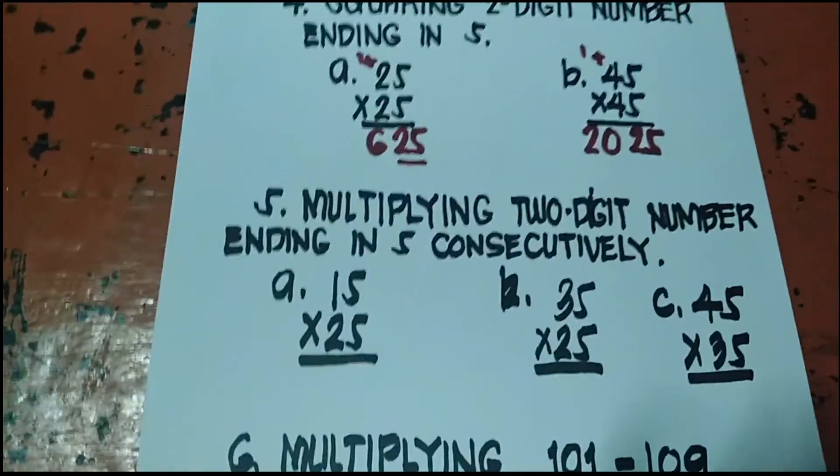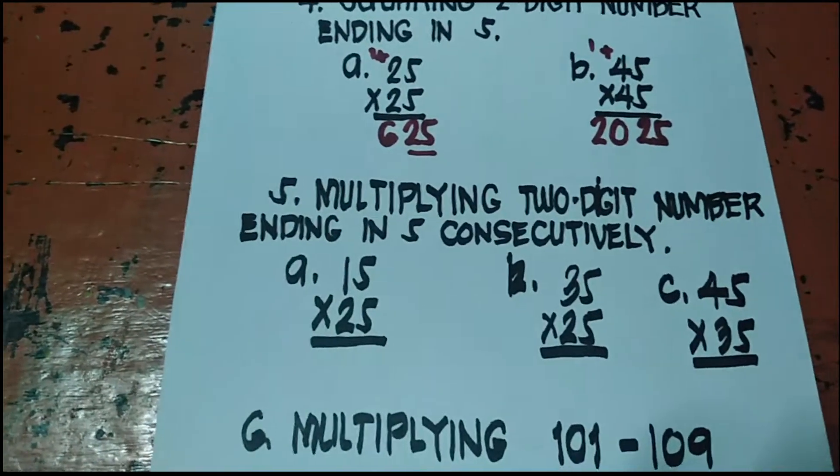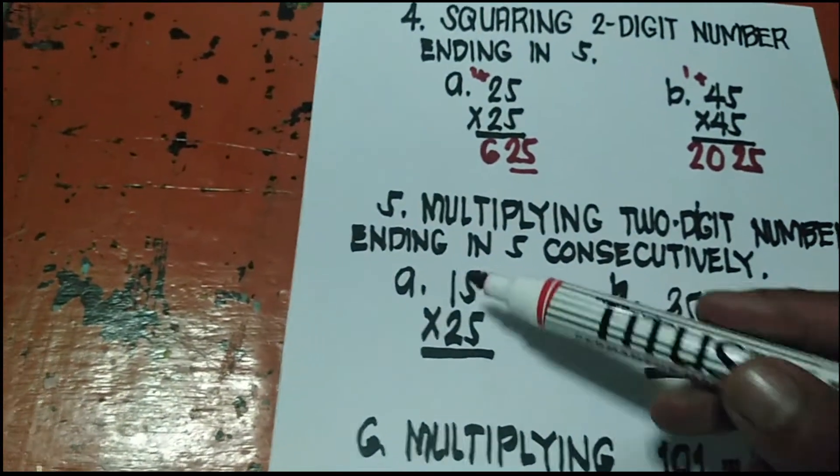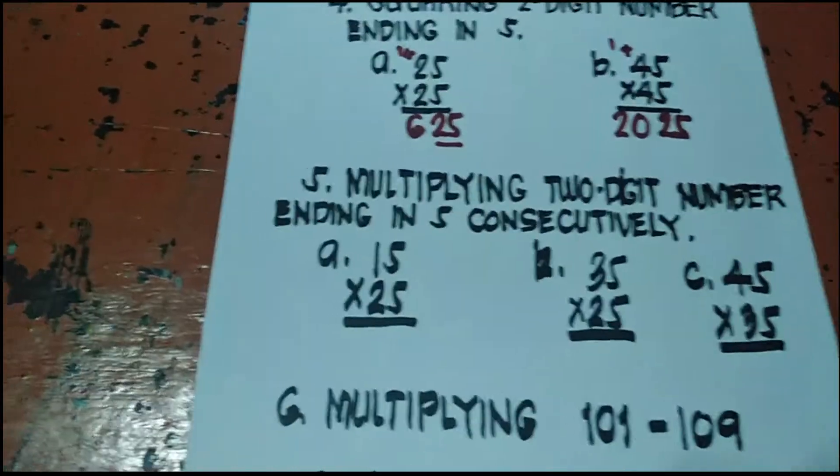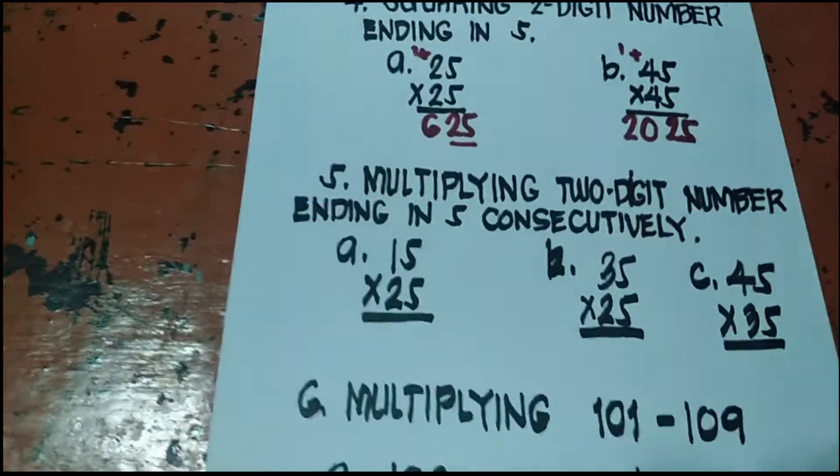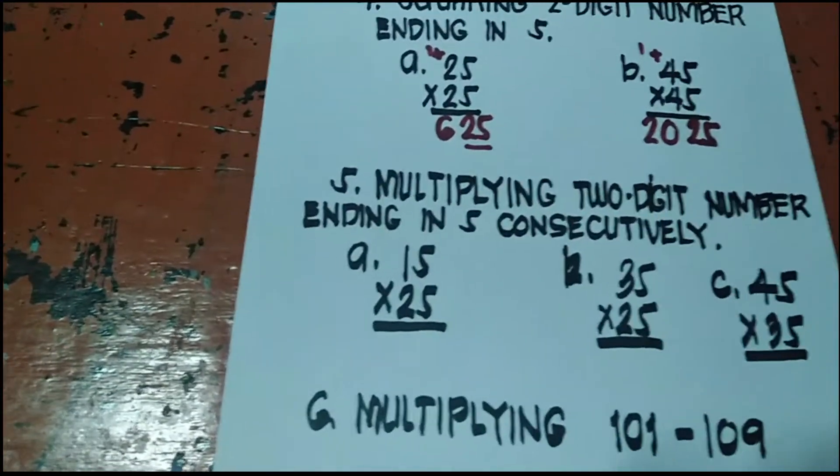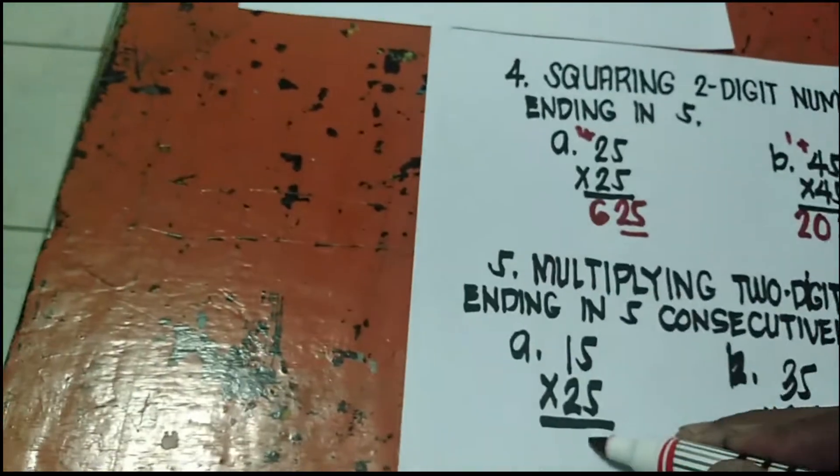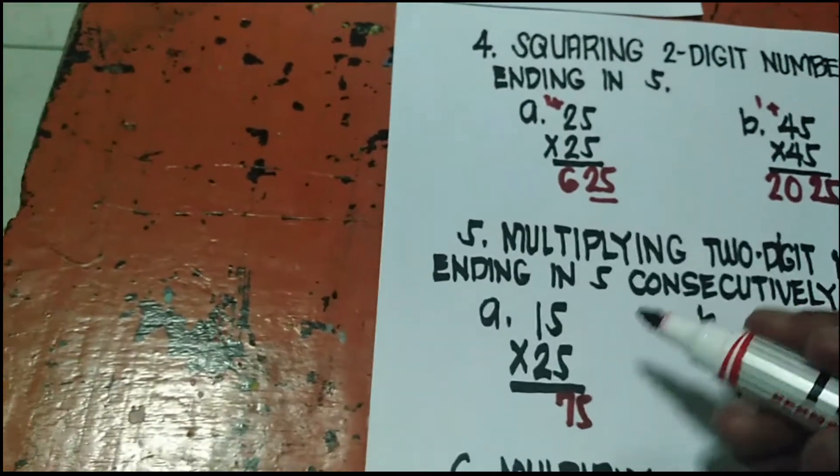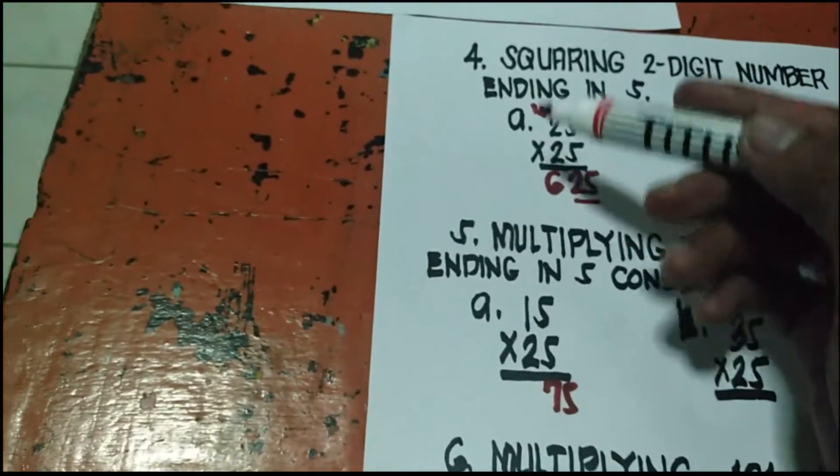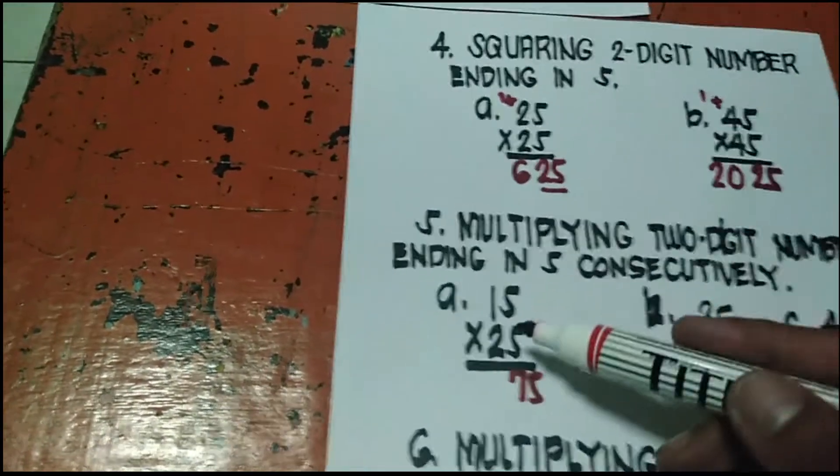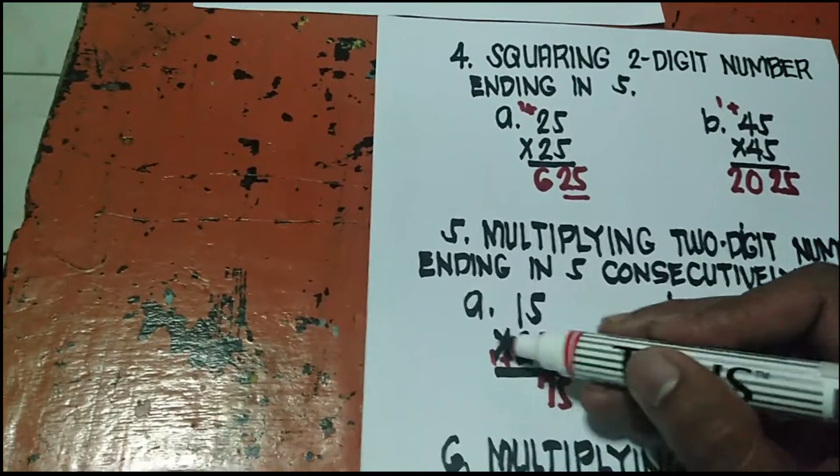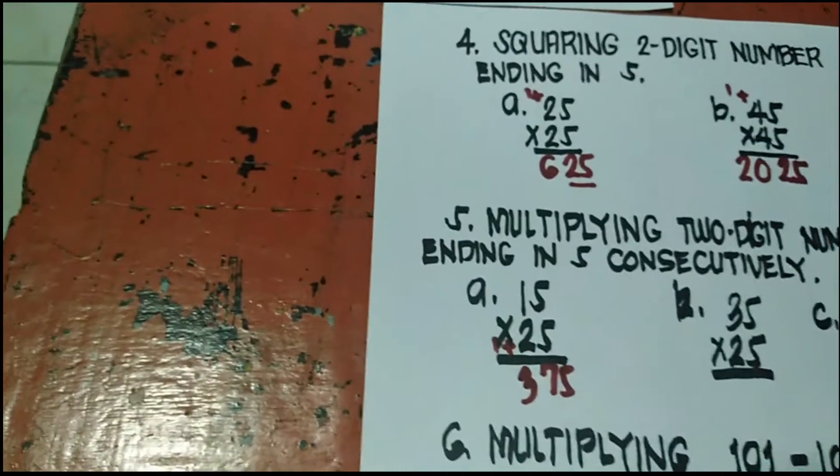Number 5 shortcut, multiply yung 2-digit number ending in 5 consecutively. Lahat dito nagtatapos sa 5, magkasunod. 15, 25. 25, 35. 45, 35. Hanggang 95. Pwede mong gamitin yan pasa yung consecutively, magkasunod na by 5. Bawal yung lumalaktaw. Paano naman to? 15 times 25. Dito, kanina always 25, dito always 75. Magpa-plus 1 ka doon sa mas malaki. Doon dati parehas sila, kaya kahit saan mo ma-plus 1 okay lang. Parehas yan. Dito ipa-plus mo yung 1 doon sa malaki. Mas malaki yung 2. So plus 1 ka dyan. 2 plus 1 is 3 times 1. So 375.